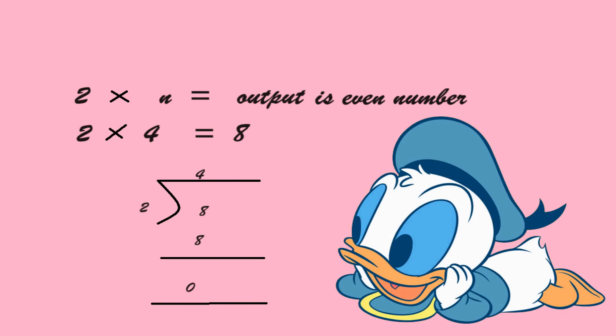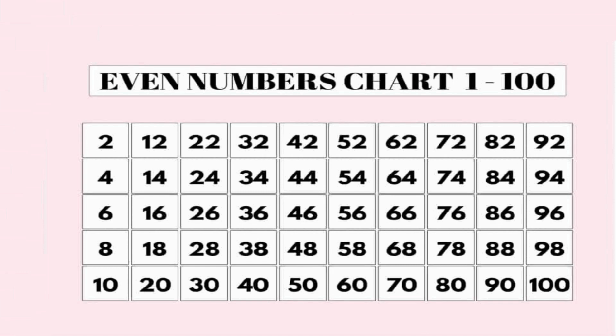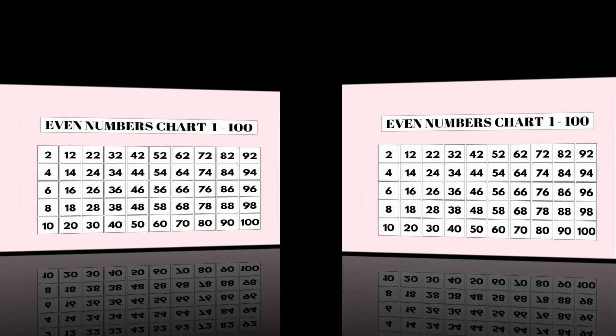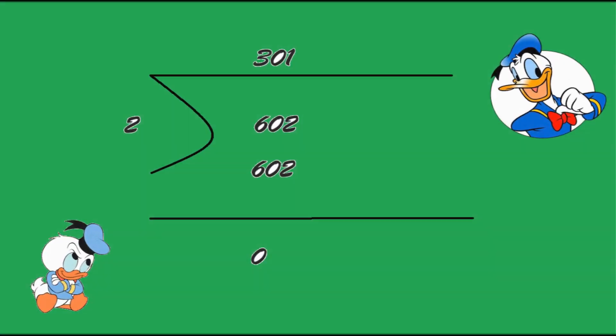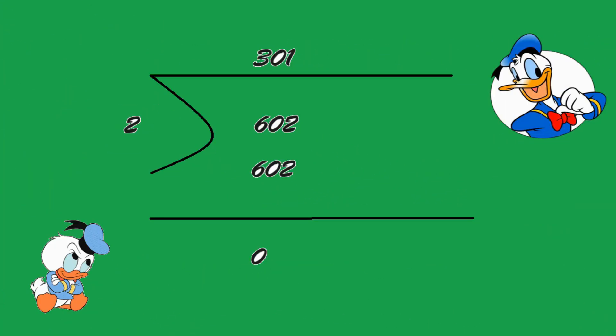This is the list of even numbers from 1 to 100. Let us see a number — is 602 an even number? Yes, it is an even number because it is divisible by 2.